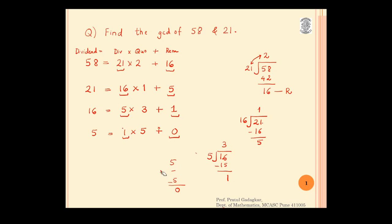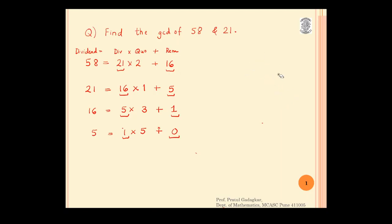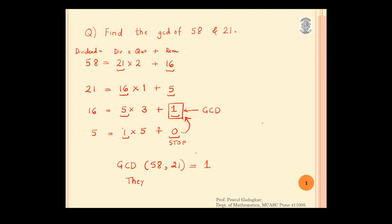When we reach a step where the remainder becomes 0, we have to stop our calculations. Here the remainder is 0, so we stop. The number which is exactly above the 0 is the GCD of the two numbers. So the GCD of 58 and 21 is 1, which means they are relatively prime — if the GCD is 1 the numbers are said to be relatively prime.